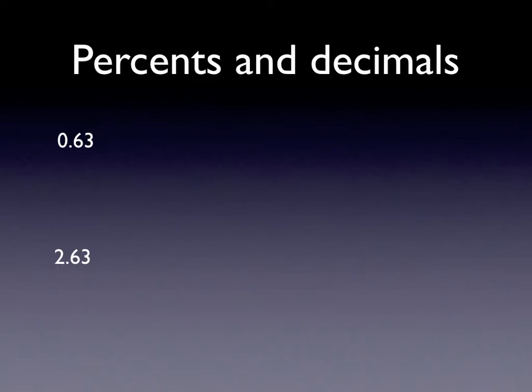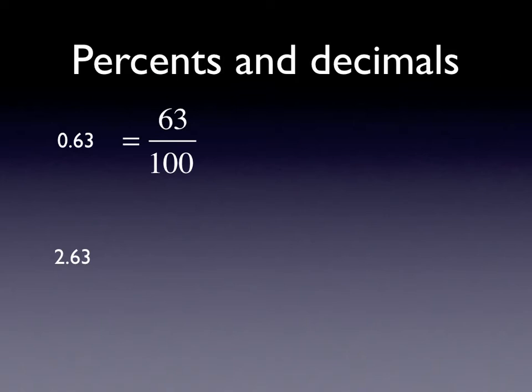Next, let's think about percents and decimals. The decimal 0.63, if we speak that aloud, we would say it is sixty-three hundredths. So we can turn the decimal into its fraction form quite quickly, and we see that it has a denominator of a hundred. So this is the same thing as sixty-three percent. So 0.63 is equivalent to sixty-three hundredths, which is equivalent to sixty-three percent.